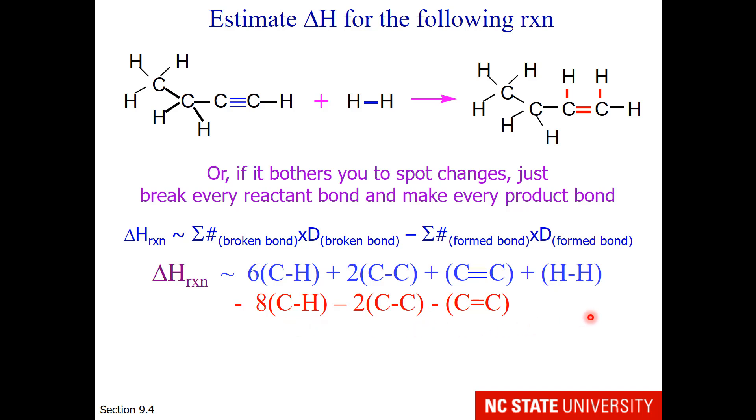Now that it's written like this, do you see perhaps some values that we can subtract and get rid of? We can get rid of breaking and making two carbon-carbon single bonds. And here, six minus eight will give us a minus two for our carbon-hydrogen bonds. So we're right back to where we were on the previous slide. The same representation.